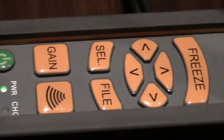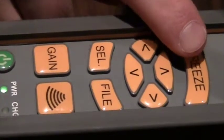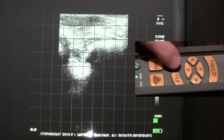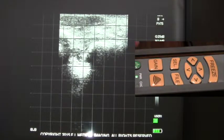To measure on the IBEX light, once your image is acquired, press the freeze key. Once the image is frozen, press the select key to bring up the measurement menu.